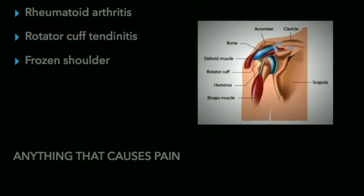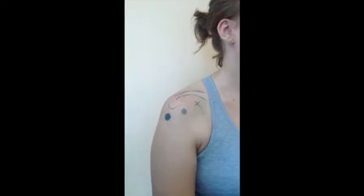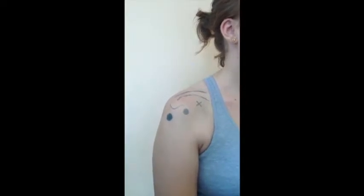Rheumatoid arthritis, rotator cuff tendinitis, and frozen shoulder are conditions of the shoulder that will typically require intra-articular injections. We will now demonstrate how to do this with a video. The shoulder joint can be injected in two places. We'll start first with the glenohumeral joint.